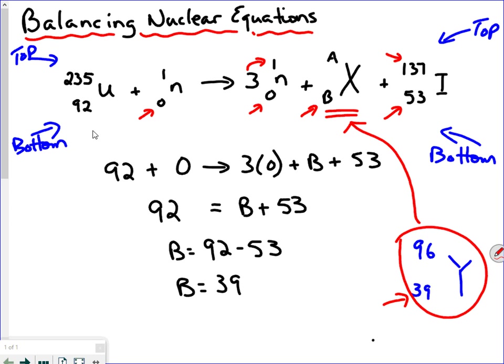Now I know that the element that will make this equation work is yttrium with an atomic mass of 96 and atomic number of 39, which means this is an isotope of yttrium. We would write it as yttrium-dash — now when we write an isotope, we write the atomic mass — so this would be yttrium-96. To make this equation balanced, the identity of element X is yttrium-96.